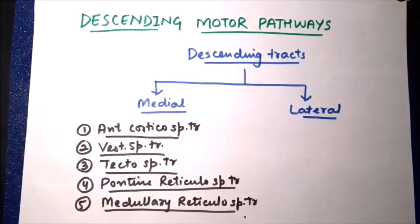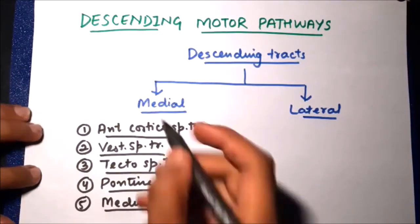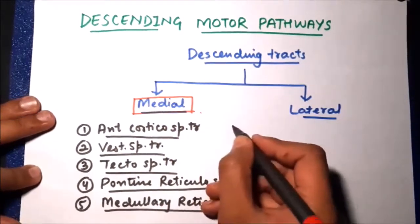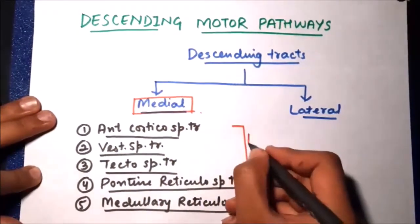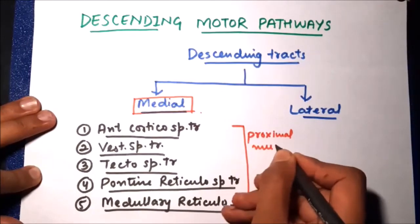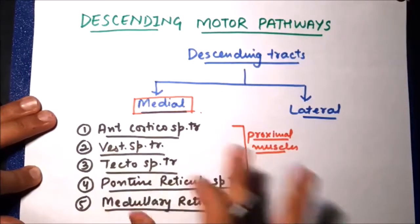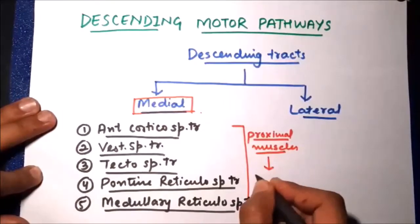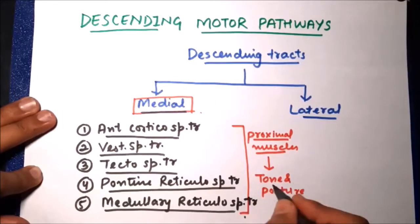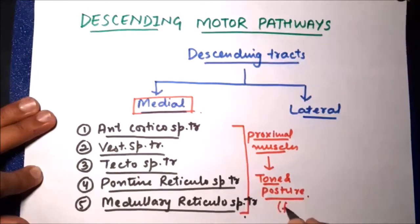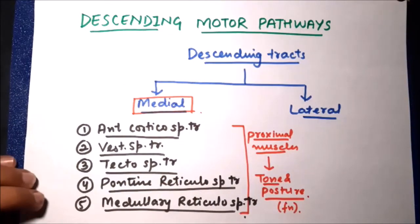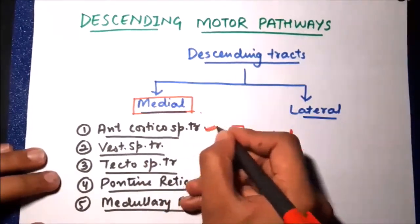These five pathways are different from lateral descending tracts in several aspects. First, they are located medially in the central nervous system. All these tracts innervate the proximal muscles — they do not innervate distal muscles. The function of all these tracts is to maintain tone and posture.